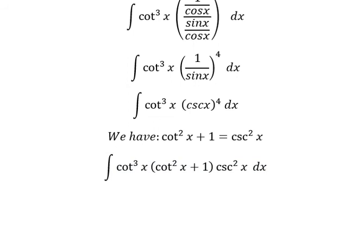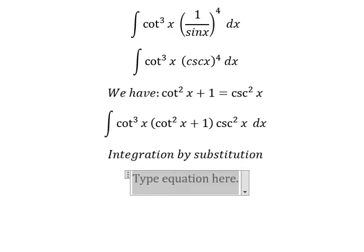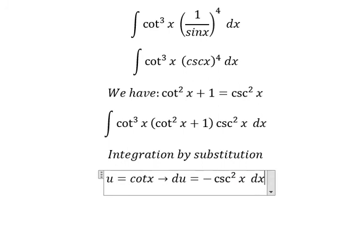Next, we need to use integration by substitution. I will set u equals to cot x. Then du equals negative csc² x dx. Because we don't have the negative sign here, we put the negative next to du.